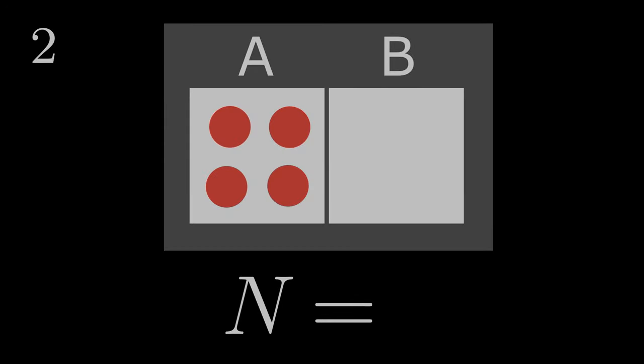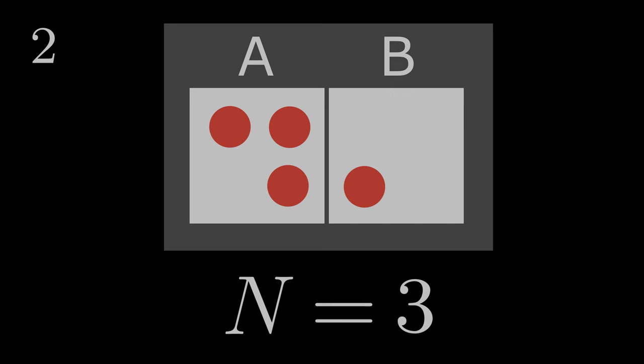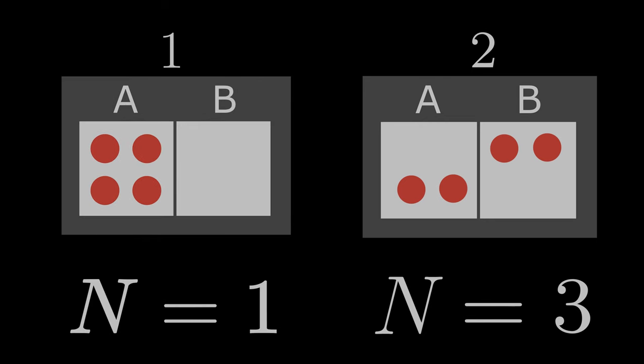Let us look at another system in which there is more than a single microstate. Let us now assume that there can be a maximum of two particles in subsystem B. The first possible microstate is where all particles are in subsystem A. The second is where a single particle is in subsystem B. And the last permitted microstate is where two particles are in subsystem B. This system has a higher entropy than the previously considered system where particles could only be in subsystem A.